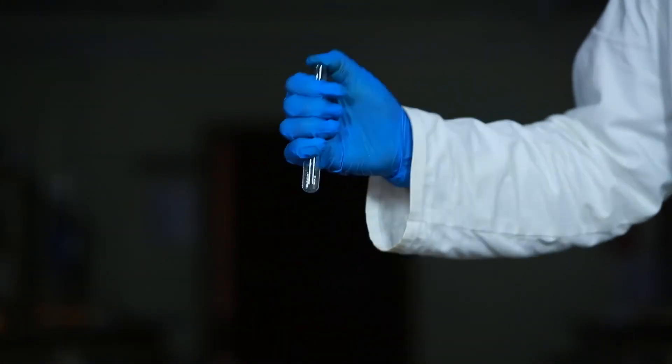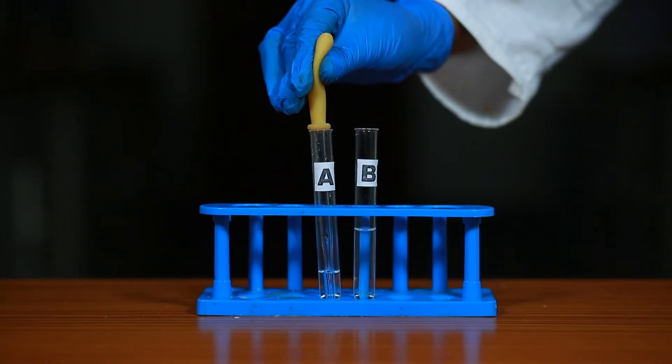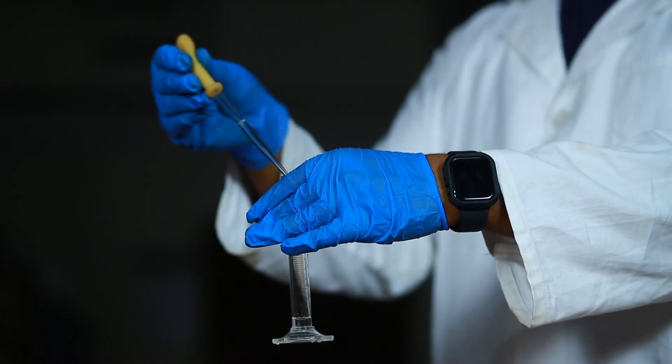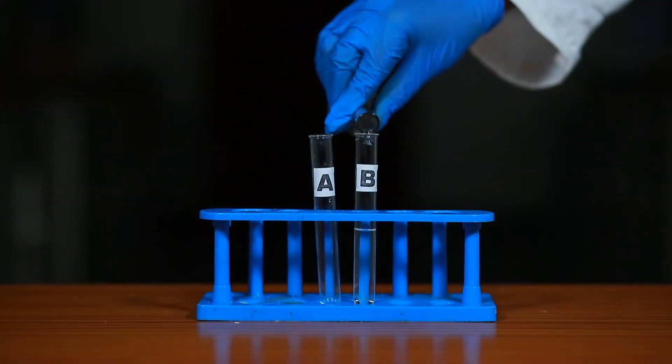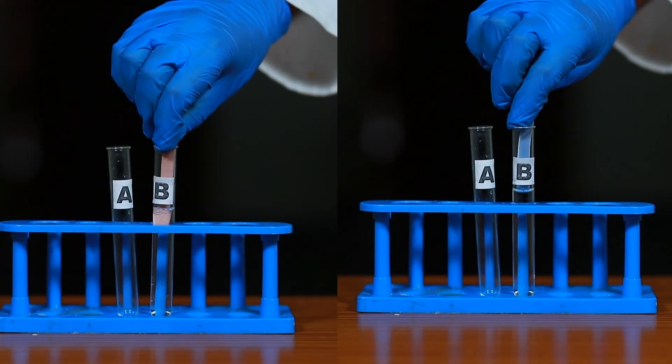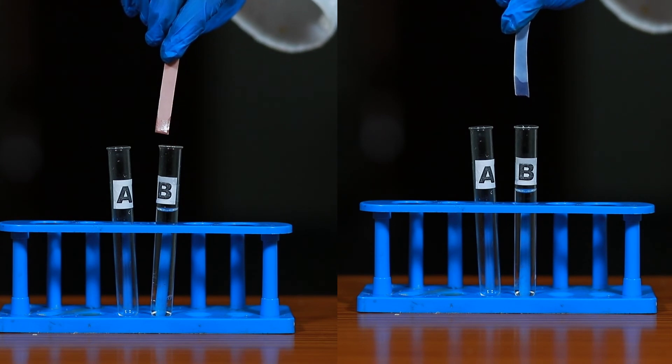Shake the mixture slowly. Keep adding the dilute HCl from test tube A to dilute NaOH in test tube B dropwise until the reaction mixture in test tube B becomes neutral to litmus paper, with no color change of blue and red litmus when pH of the solution is 7.